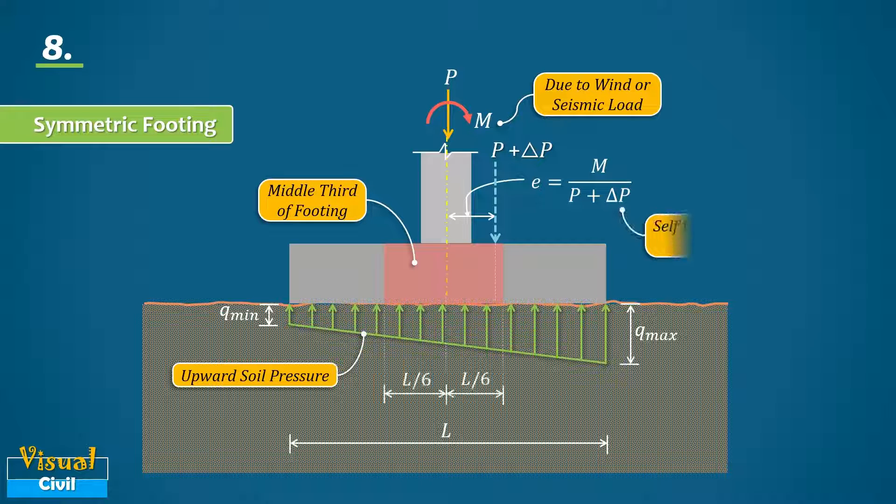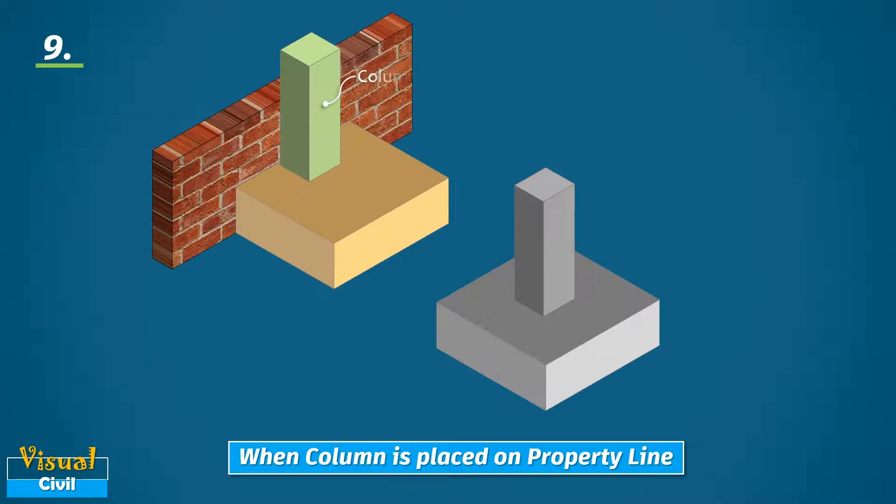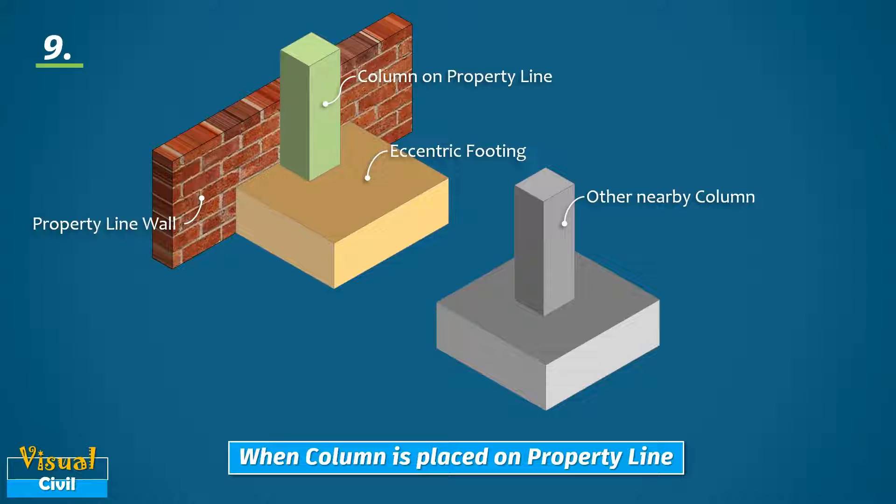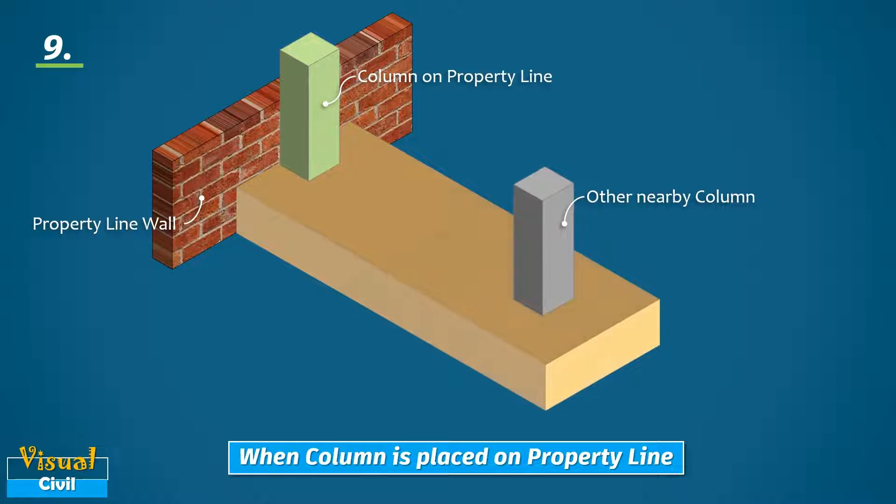If the column is on the property line, then the position of the column is at the edge of the footing as shown here. In this case, it is preferred to combine that footing with an adjacent closely spaced column footing. This type of footing is called a combined footing.